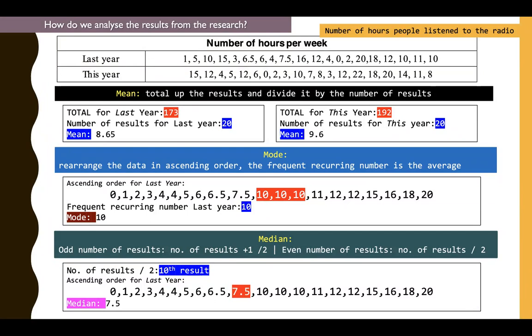Let's just look at last year's information: 8.65 hours for mean, where you divide with the total number of results. Mode, where you rearrange in ascending order and pick the most recurring number, quite straightforward to do. And median, where you still arrange in ascending order, but what you need to do is determine the number of results, whether it's odd or even.